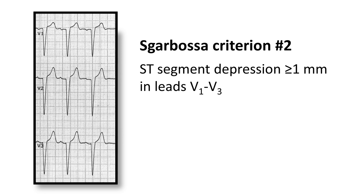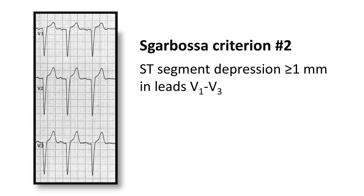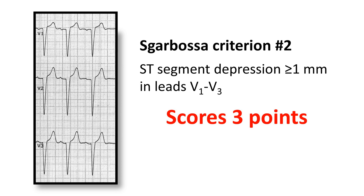The second Sgarbossa criterion is similar. What we're looking for is evidence of ST segment depression in the presence of negative QRS complexes — specifically in leads V1, V2, and V3. Normally in those leads the ST segments are elevated, because appropriate discordance says that a negative QRS complex should have ST segment elevation. However, if the patient is having an acute myocardial infarction, we'd be looking for ST segment depression in these leads. That would be concordant and therefore abnormal, and it scores three points.